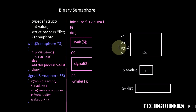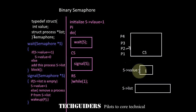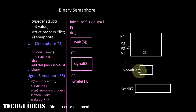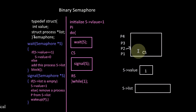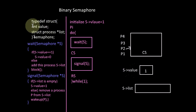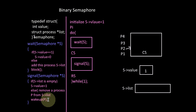For example, if P2 again tries to enter the critical section, it will check the semaphore value. Since the value is one, P2 will enter the critical section. Thus the value of the semaphore is either zero or one at any time, which is why it is called a binary semaphore. By using this queue along with block and wake-up functions, busy waiting is avoided. And if the queue is maintained as a first-in-first-out queue, processes are served in order of request and bounded wait is achieved.